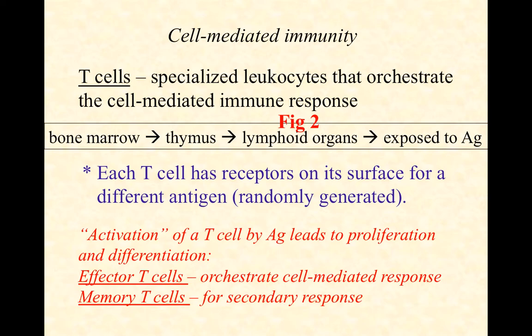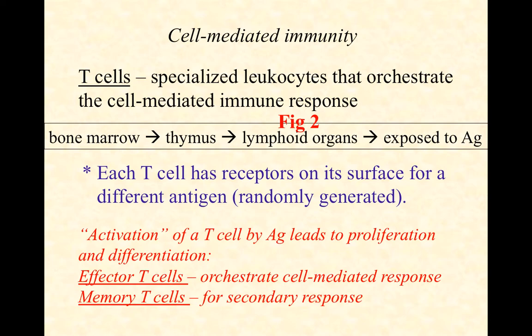These T-cells begin their lives as pluripotent stem cells in the bone marrow. When those stem cells receive signaling molecules indicating that T-cells are needed, they begin to differentiate and then migrate to the thymus. The thymus is where clonal deletion takes place for T-cells — that's where T-cells get their name, undergoing this final phase of maturation. From the thymus, they migrate to the various lymphoid organs, where they'll sit and wait until they are exposed to antigen.